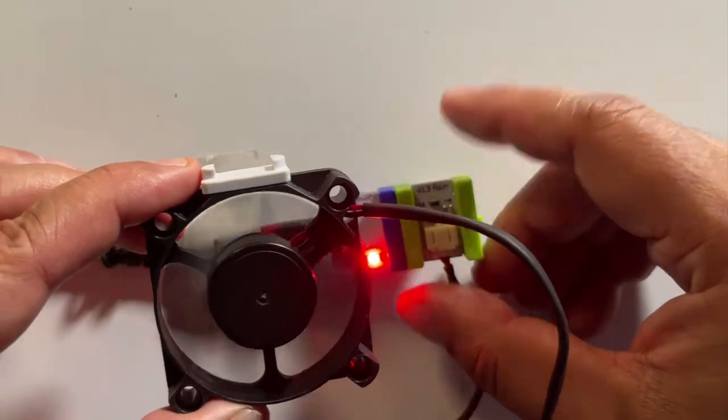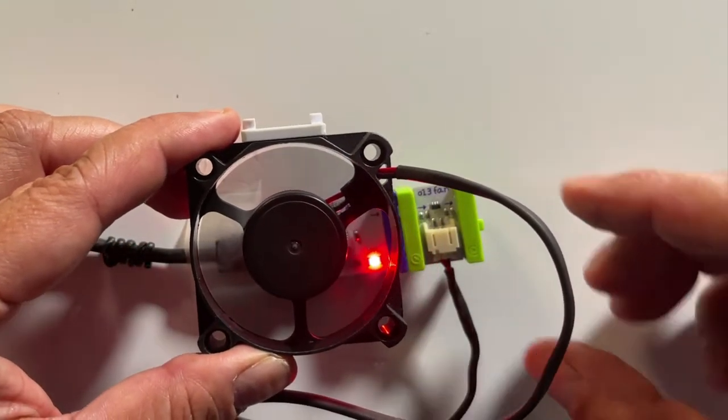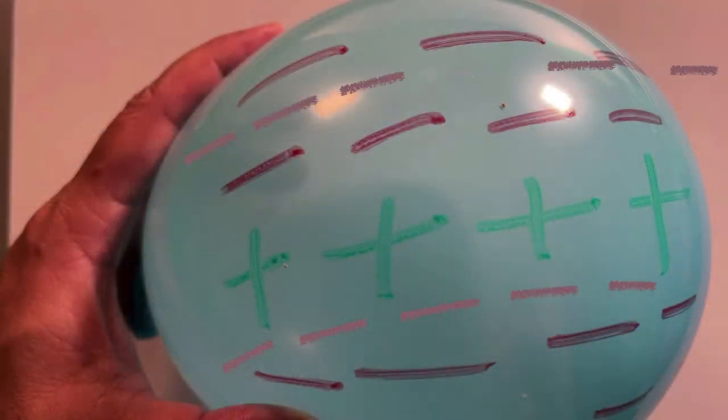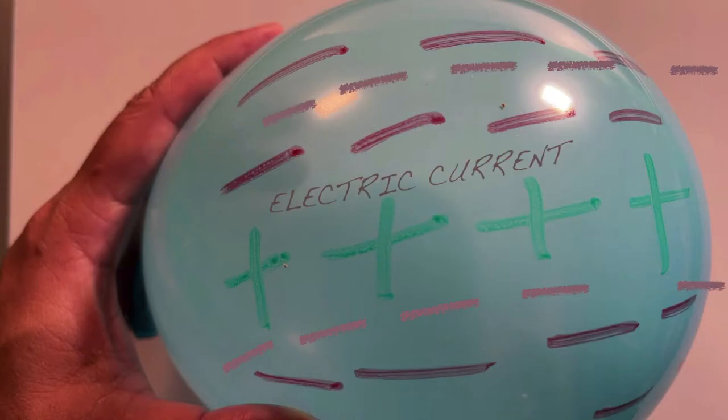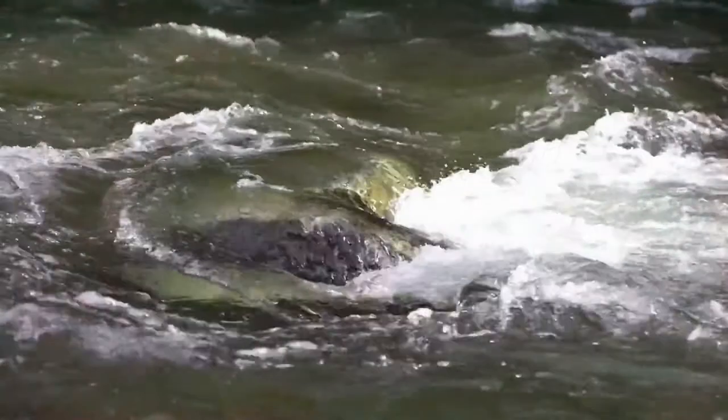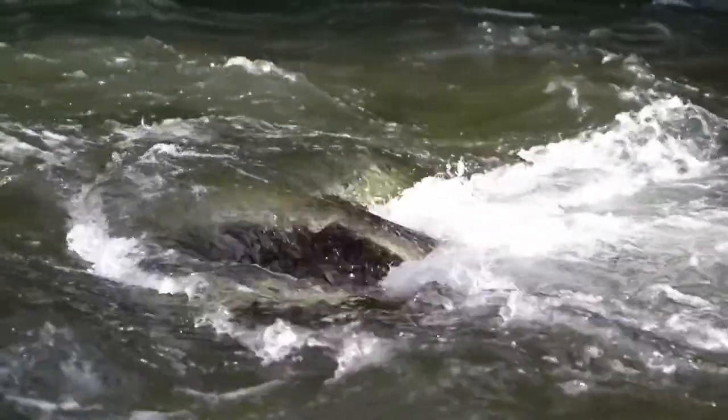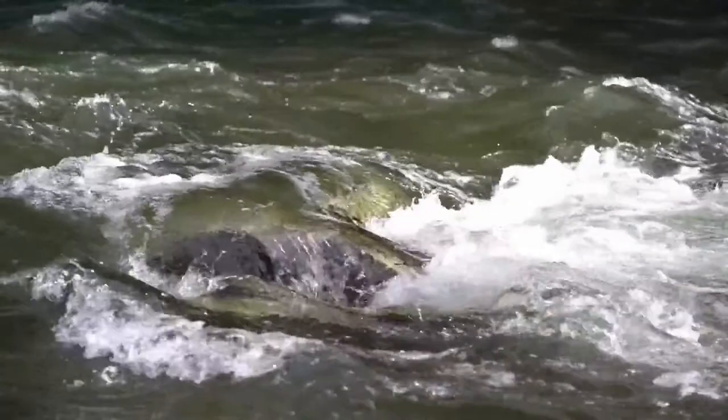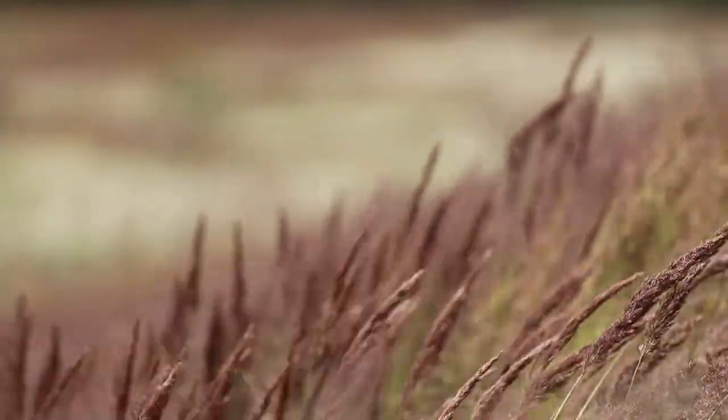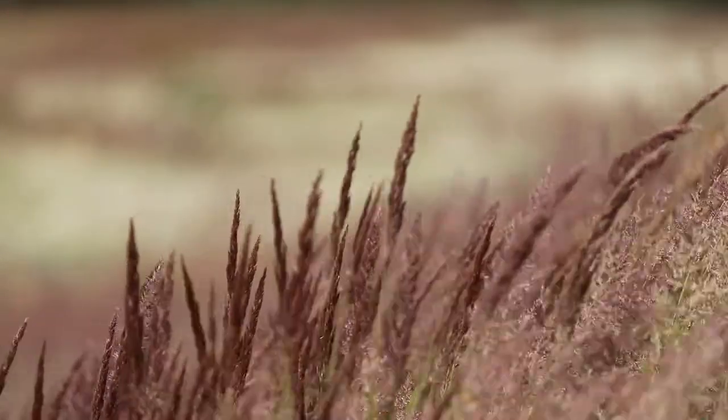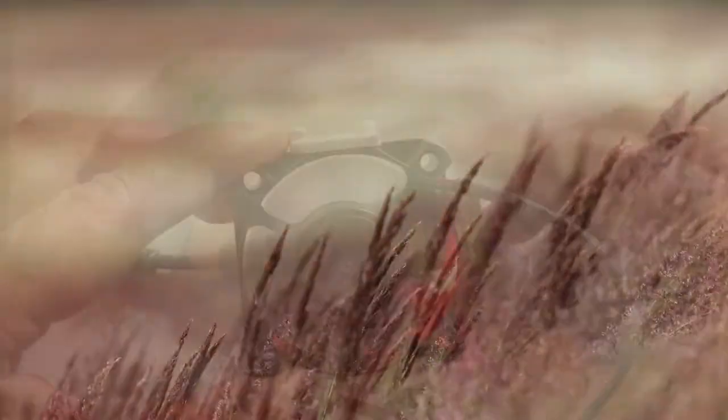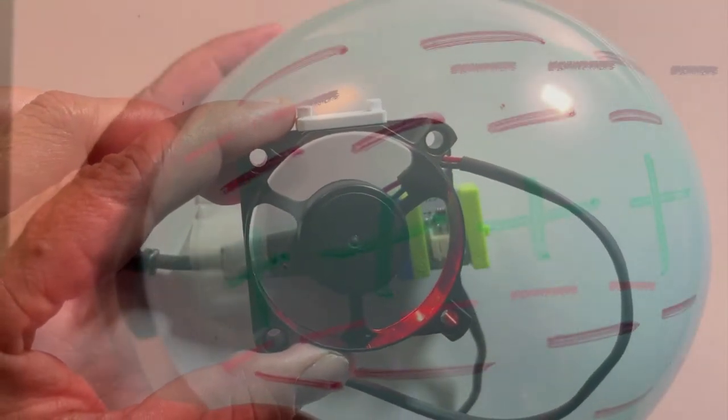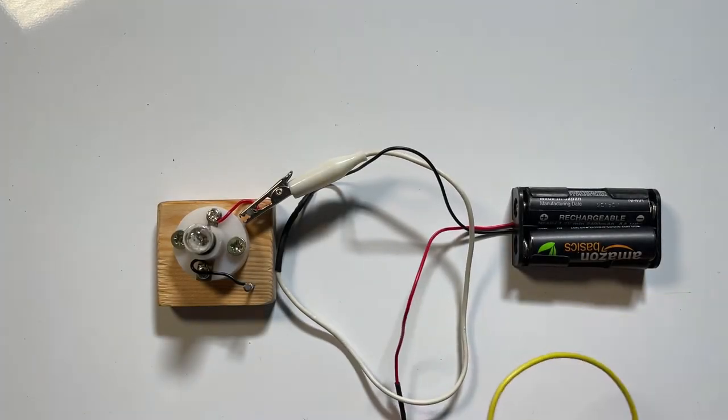When the electrons start flowing, it is called electric current. You must have heard the word current: river current means how fast water is flowing in a river, wind current means how fast the wind is blowing. Current simply means flow, and when electrons start flowing we call it electricity.